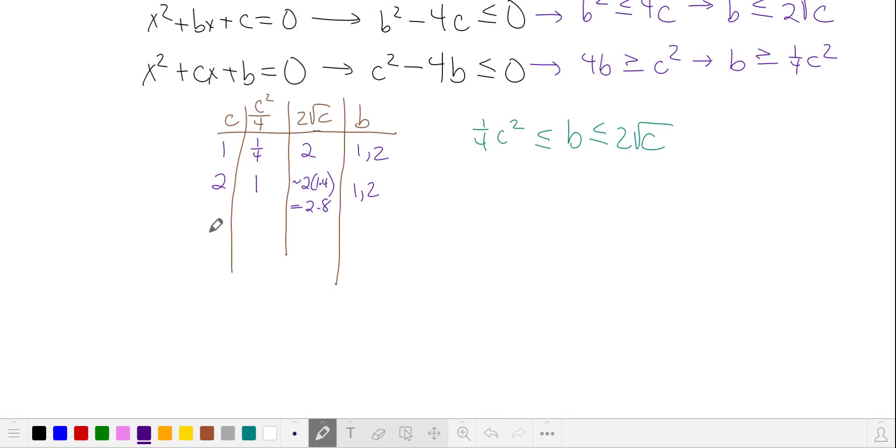Let's try c is equal to 3. That's 9 fourths or 2 and 1 fourth. And then 2 times the square root of c is approximately 2 times 1.7, which is 3.4. So we're looking for positive integer values of b that are greater than 2 and 1 fourth and less than 3.4, so that's just 3.